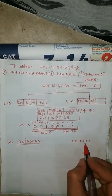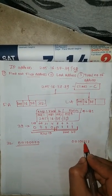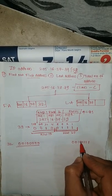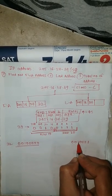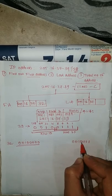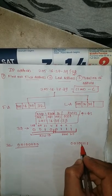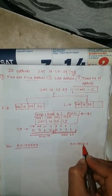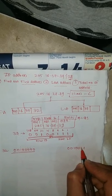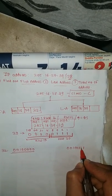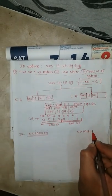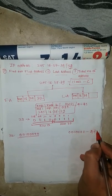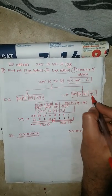To find the last address, we convert all remaining host bits to 1s. The network ID bits stay as 0010 and the host bits become 1111, giving 00101111. Converting: 32 + 8 + 4 + 2 + 1 = 47. So the last address is 205.16.37.47.